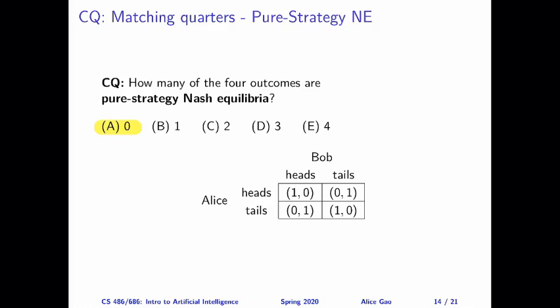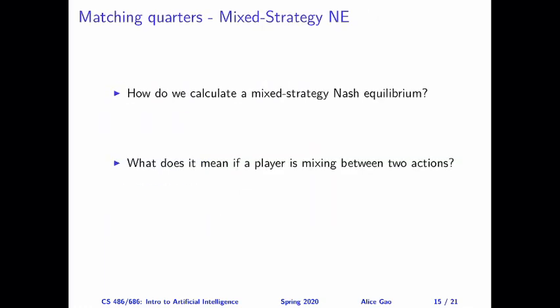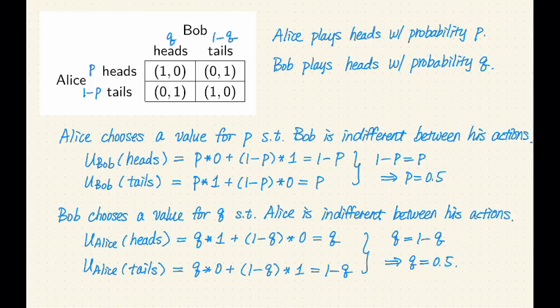Next, let me show you how we can derive this mixed strategy Nash equilibrium. The derivation answers the first question: given a game, how do we calculate the mixed strategy Nash equilibrium? But after deriving it, we are also going to think about a second question — if a player is mixing between two actions, how should we understand this? Why is the player really doing this?